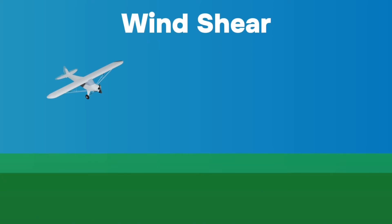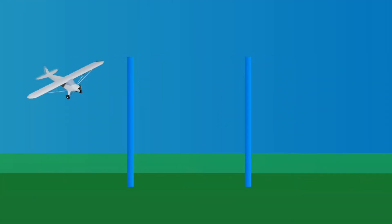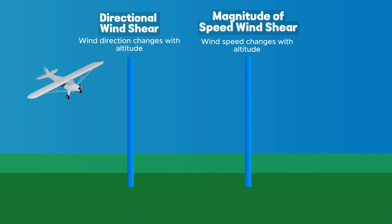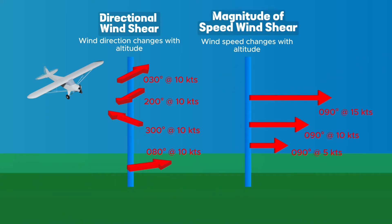Wind shear can be a horizontal or vertical change in wind speed. This means that even if you have the same wind speed but the direction is constantly changing at different altitudes or pockets of air, this is considered wind shear. Similarly, even if the wind direction is the same throughout but the wind speed changes at each location, this is also wind shear.